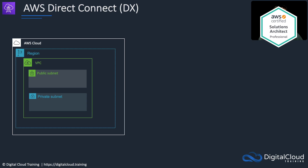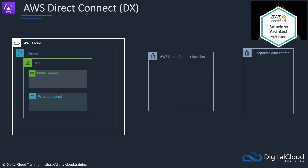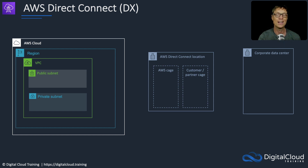Let's look at the configuration of Direct Connect. We have an AWS region with a VPC and a corporate data center, and we want to connect that to AWS. To do so, we connect via an AWS Direct Connect location, which can be found in many cities around the world. In the Direct Connect location there's an AWS cage where AWS has their networking equipment, and then a customer or partner cage. A customer cage means you own a rack with your own networking equipment. A partner means an APN partner with their own cage, and you can get a connection into their cage for connectivity into AWS.